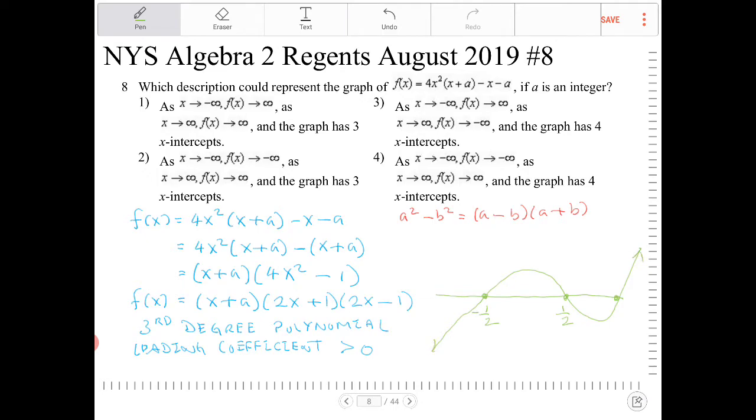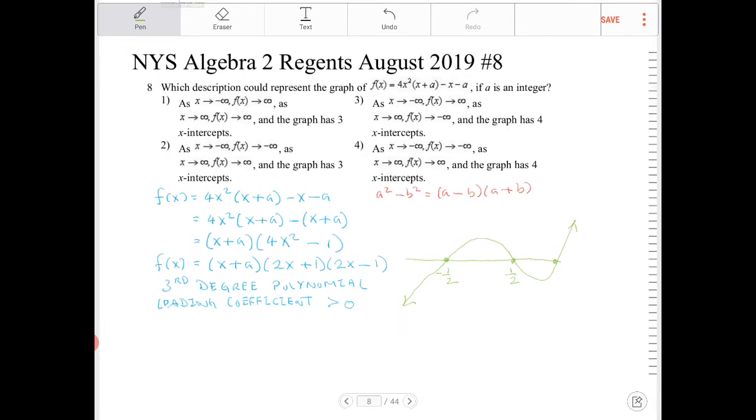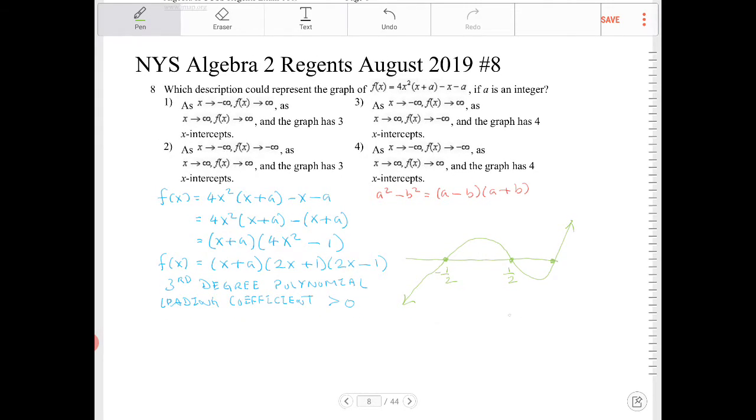The end behavior, no matter what the value of a is, is going to behave in the same manner. So we could have a in between negative half and positive half, and I guarantee you the shape wouldn't be any different. So it's going to look something like this.